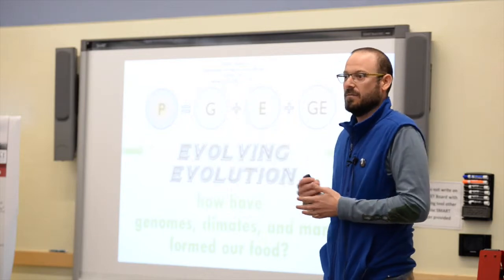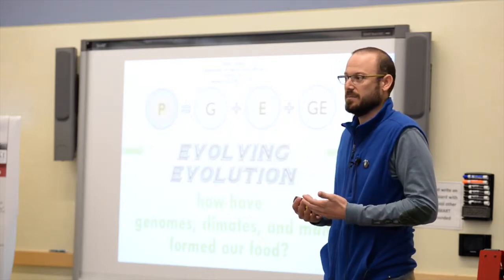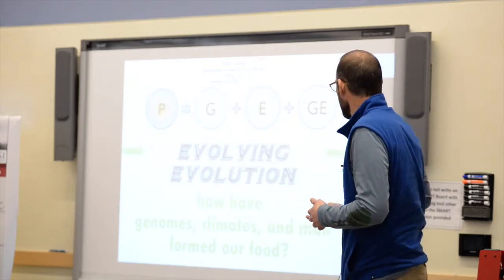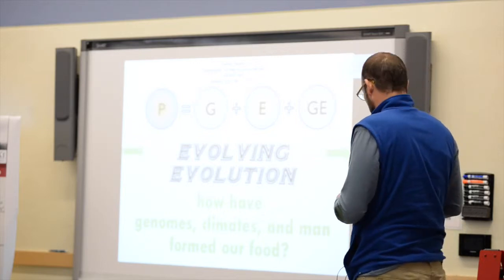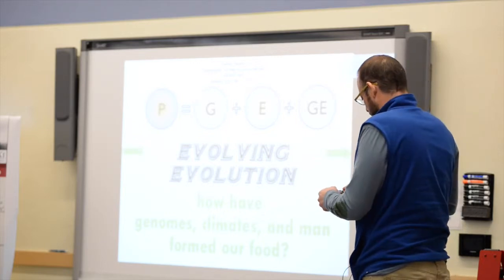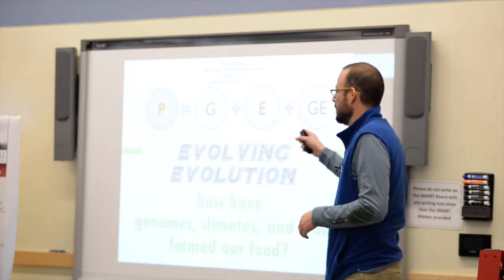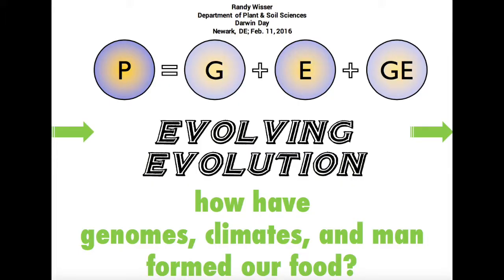There are different values of that height. We refer to those as phenotypes. In plant breeding, one of the things you learn when you go to school to study plant breeding is this equation: Phenotype equals genotype plus environment plus genotype-by-environment interaction.